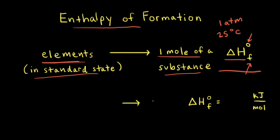Let's think about forming one mole of carbon dioxide. Carbon dioxide is composed of the elements carbon and oxygen, and under standard conditions, the most stable form of carbon is graphite. So we're going to write carbon in the solid state and write graphite.